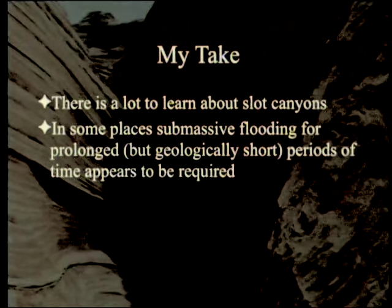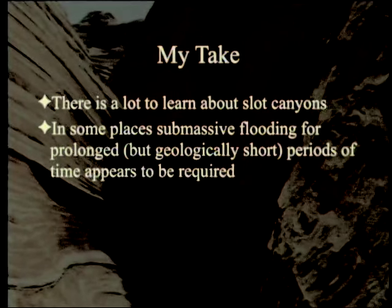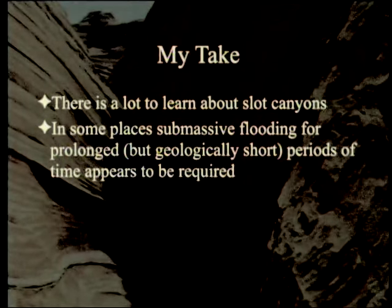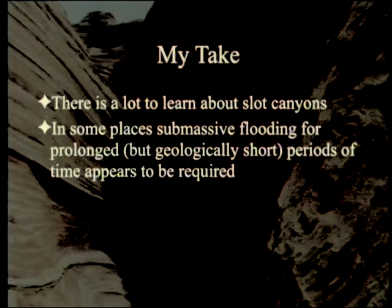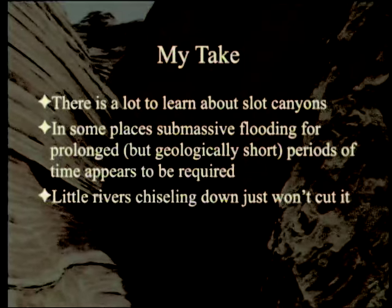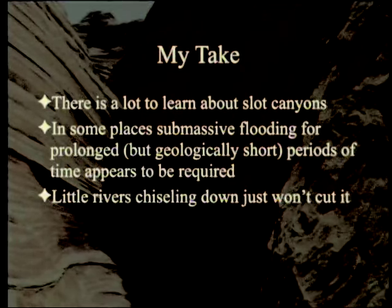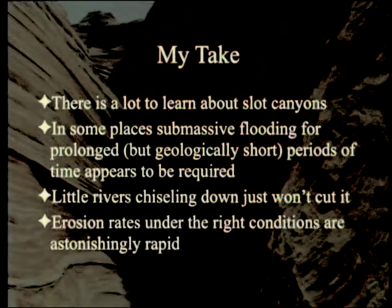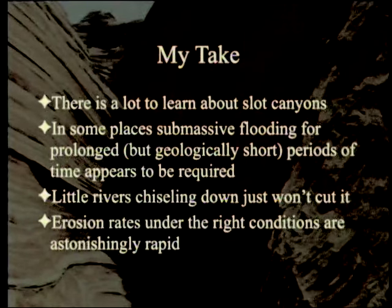Little rivers chiseling down are needed, especially in places like Petra where there's no river there now. They just won't cut it. Erosion rates under the right conditions are astonishingly rapid. It's interesting to try to build a model with those kinds of constraints — could we learn something useful for general geology?